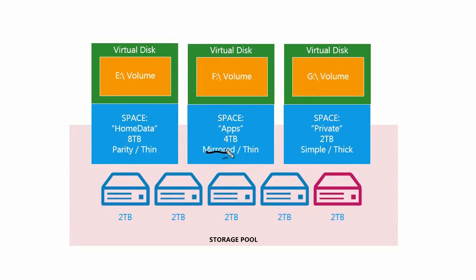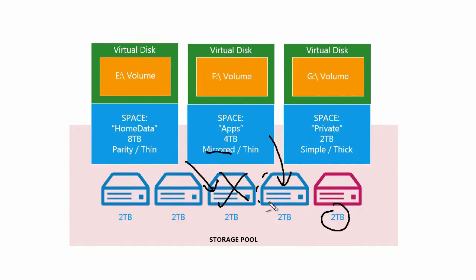The mirrored option means all the data is going to be stored on at least two physical devices in the underlying storage pool, and that's why we designated a hot spare. So if this one is carving its data off of two drives and one fails, it will still have a backup, and it can grab the hot spare and start mirroring the data over to it.